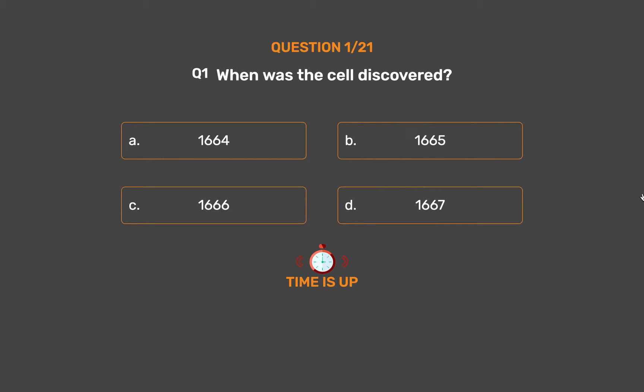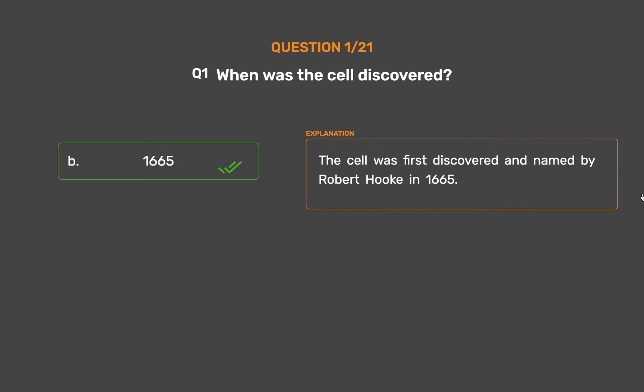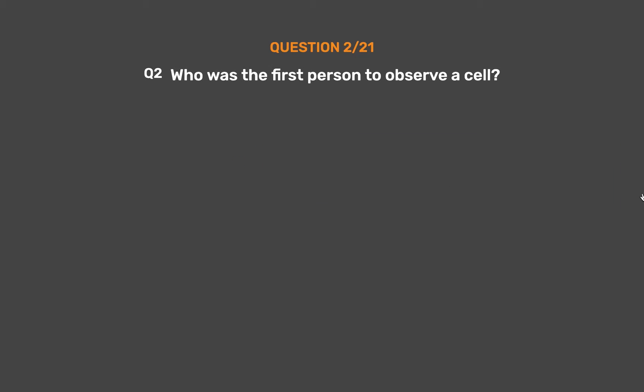The correct answer is Option B: 1665. The cell was first discovered and named by Robert Hooke in 1665.